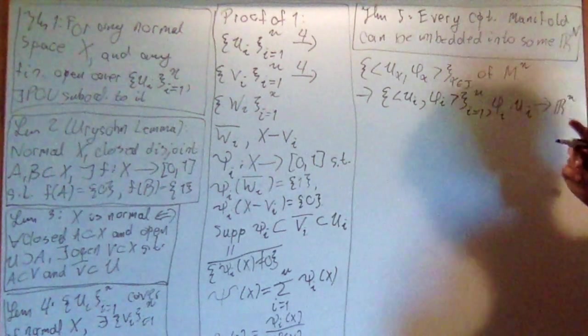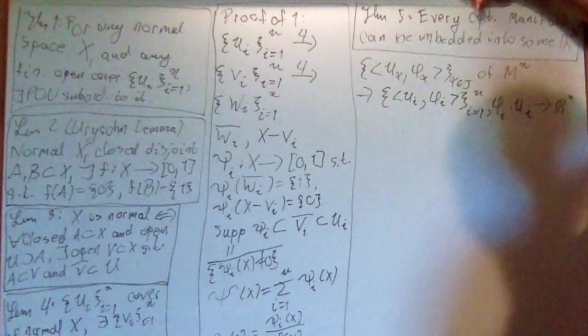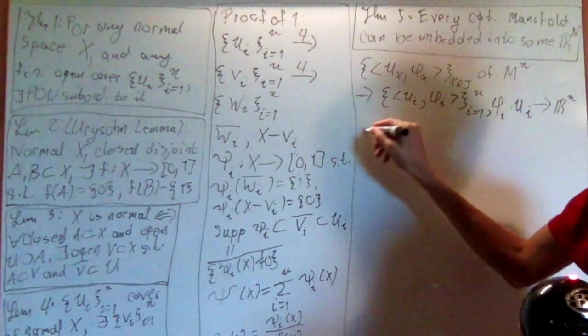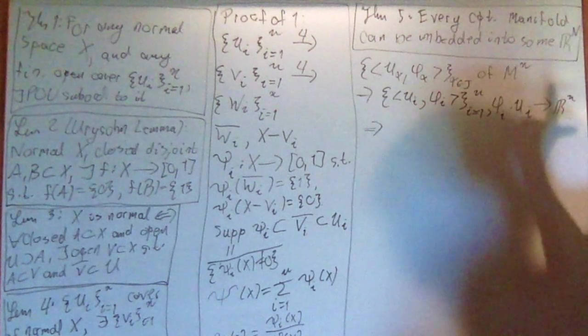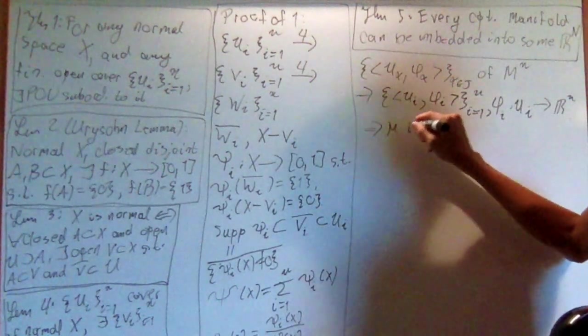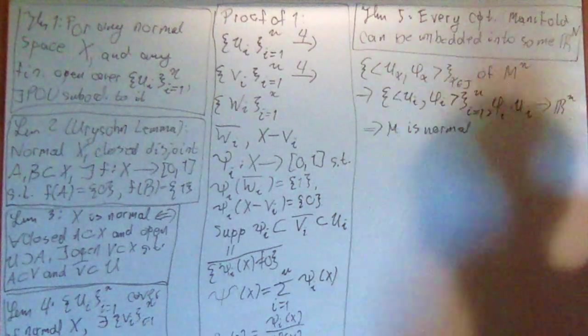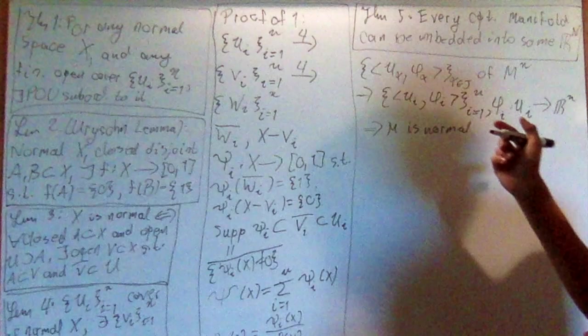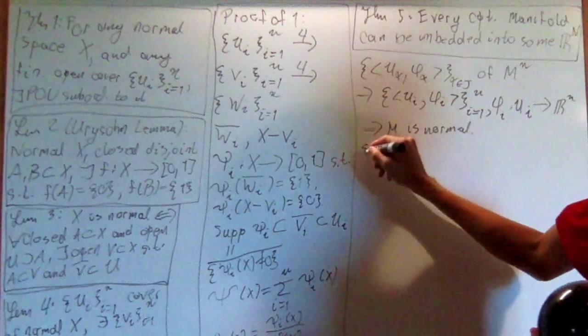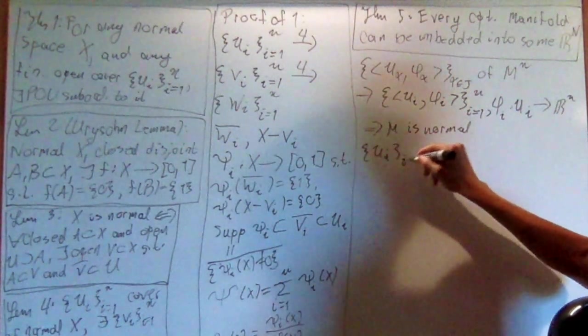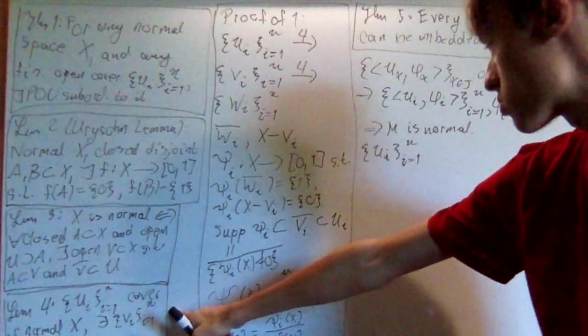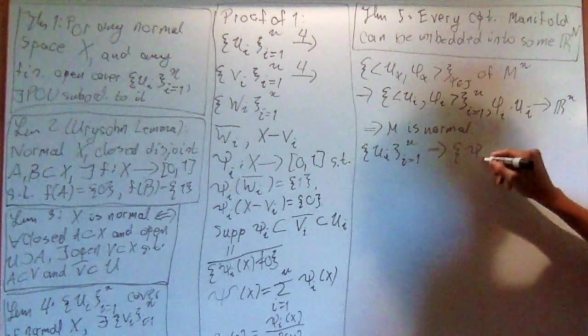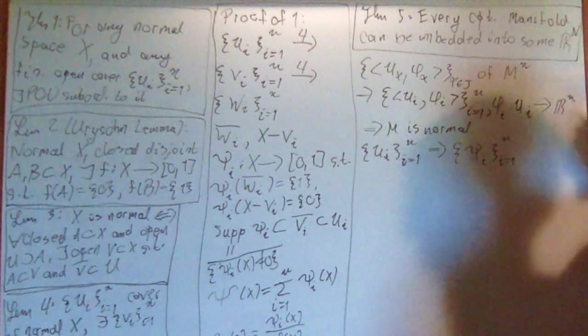And then the next part is that because it's compact and because manifolds are hausdorff, that means every compact hausdorff space is normal. So m is normal. And then we'll create a partition of unity subordinate to these u i's. And so we'll have u i from i equals one to N. Using this one, and the fact that it's normal, we create the partition of unity subordinate to it. Psi i from i equals one to N.